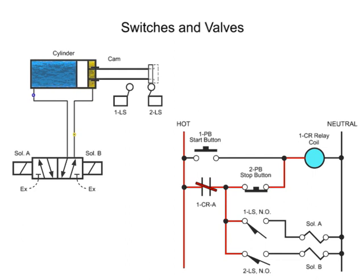When the stop button is pressed, the relay coil becomes de-energized and relay contacts 1CRA open, disconnecting the circuit. This removes current from the entire circuit and de-energizes both solenoids.